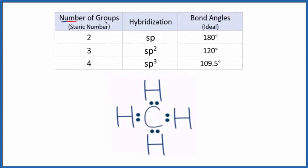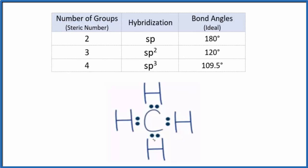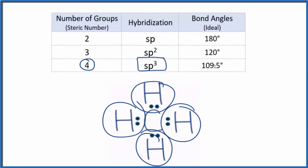We're looking for the number of groups or the steric number on that central carbon. Hydrogen doesn't hybridize, so we're not worried about that. We have one, two, three, four hydrogens bonded to that central carbon. That means our steric number is four, we have sp3 hybridization, and the ideal bond angle is 109.5 degrees.